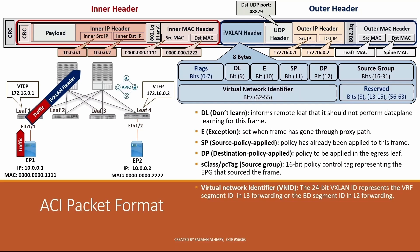The spine sends the packet to the egress leaf, which decapsulates — removes the outer header — and sends the packet to the egress interface towards endpoint 2. In summary, in ACI the original packet is encapsulated at the source VTEP with an outer header referencing the ingress and egress leaf switches. The underlay devices — the spines — forward the packet based on the outer header without awareness of the original payload. At the destination VTEP, the outer header is stripped off and the packet is forwarded based on the inner header, which references the source and destination endpoint identities.